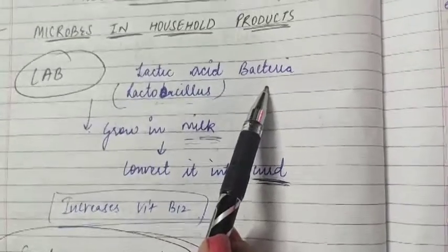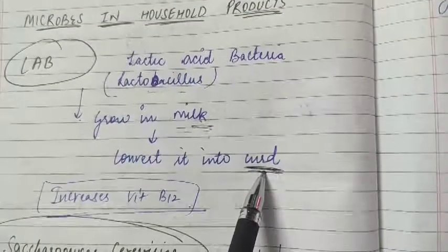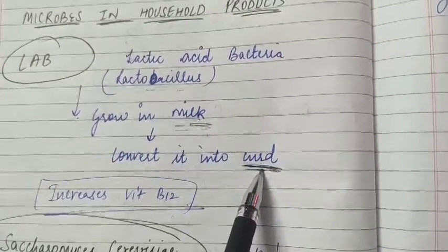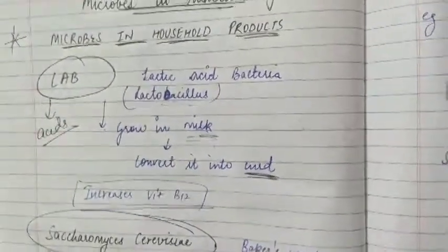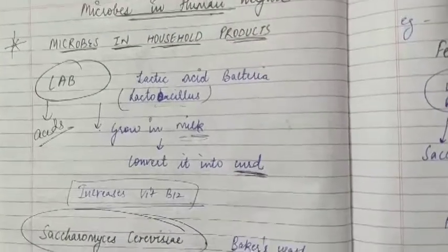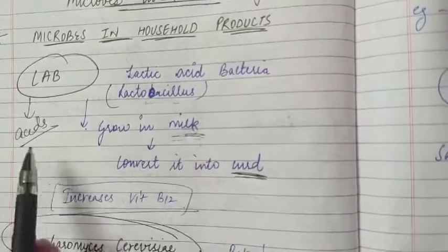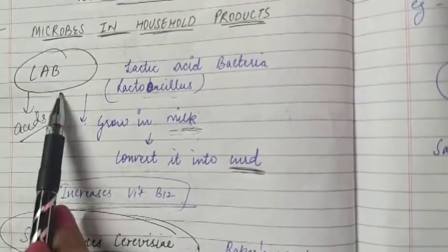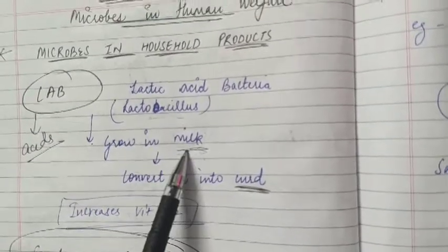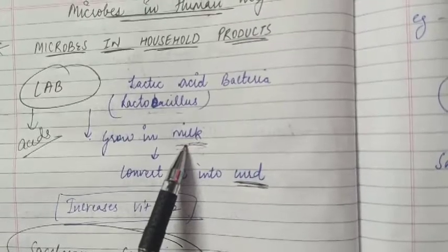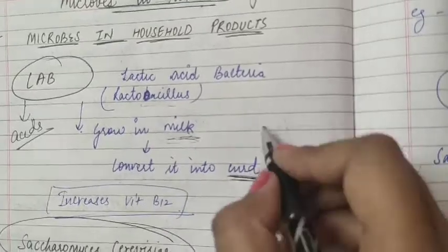This bacteria grows in milk and converts it to curd. When it grows, the LAB produces many acids. These acids cause coagulation, and all the proteins in milk are digested. A small amount of curd, when added to fresh milk, acts as an inoculum, which we call a starter.